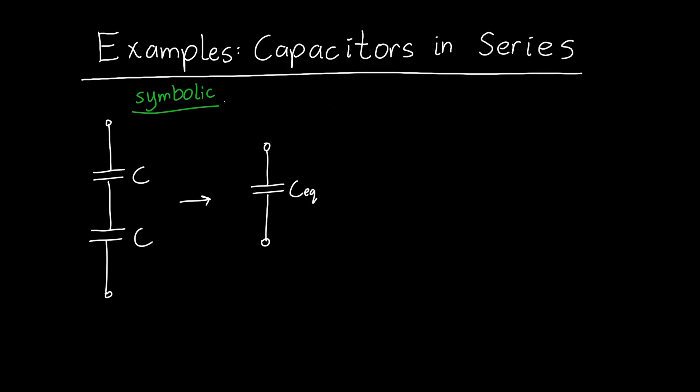So we're going to start out with some symbolic examples and in this first example we want to know what the equivalent capacitance is of two capacitors in series that have the same capacitance C. And this is actually a very common example. You'll see it all the time in electrical engineering and physics.